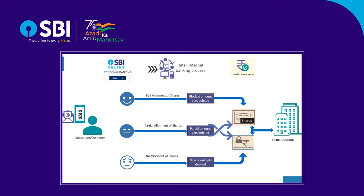In case there is insufficient balance available in the applicant's account, the application will be rejected by the bank itself. If the information furnished by the applicant is incorrect or insufficient, the bid is liable to be rejected and the company or bank would not be liable for any losses. Verify your bank account for blocking and unblocking of funds. Check your DMAT account in case the shares are allotted to you. For any updates or clarification, contact your bank. Thank you and happy investing.